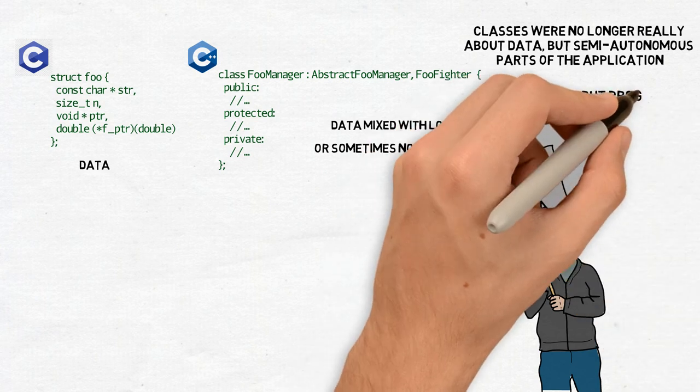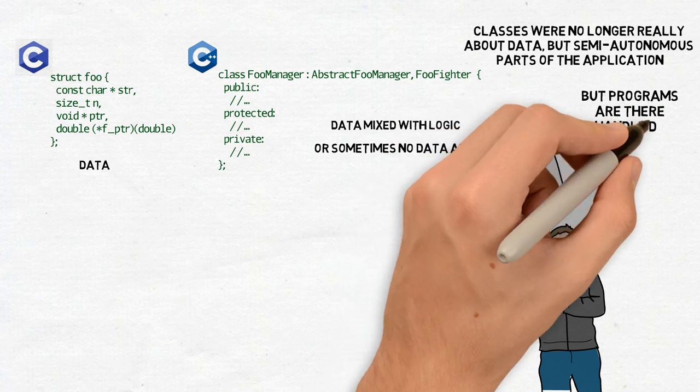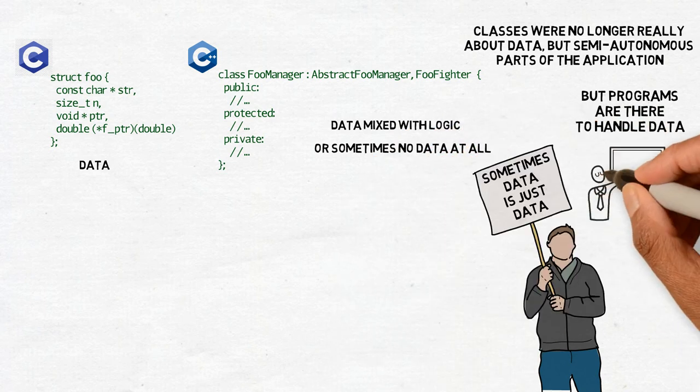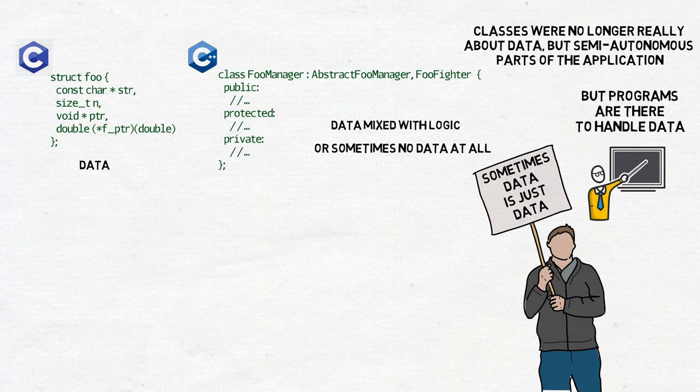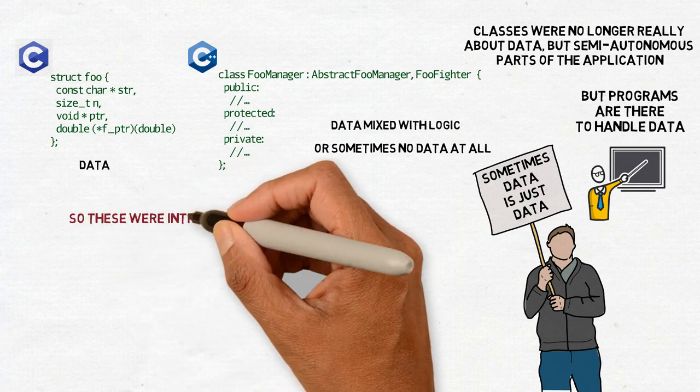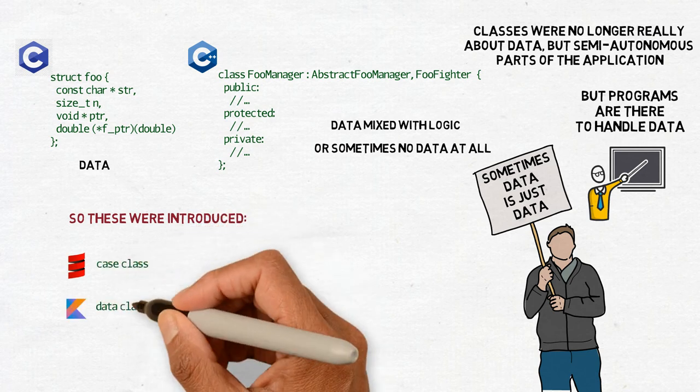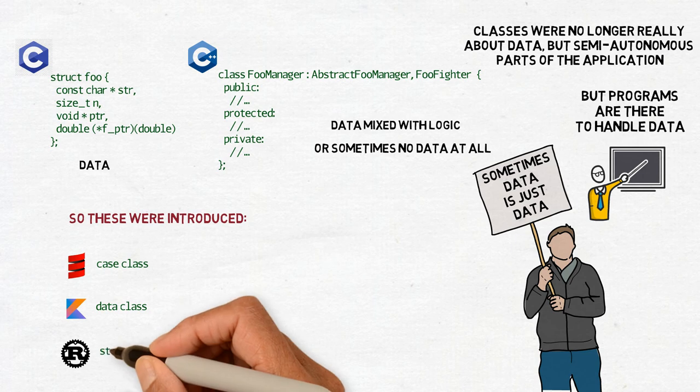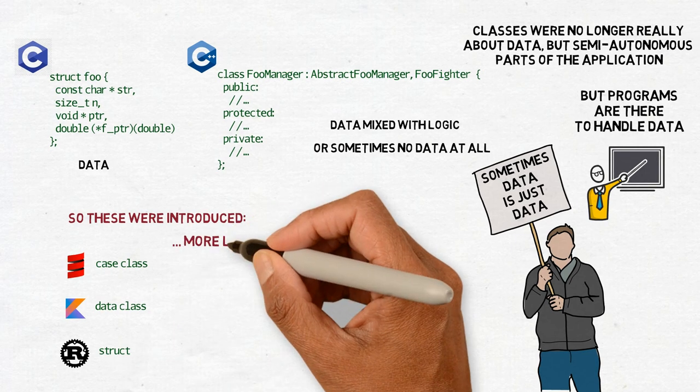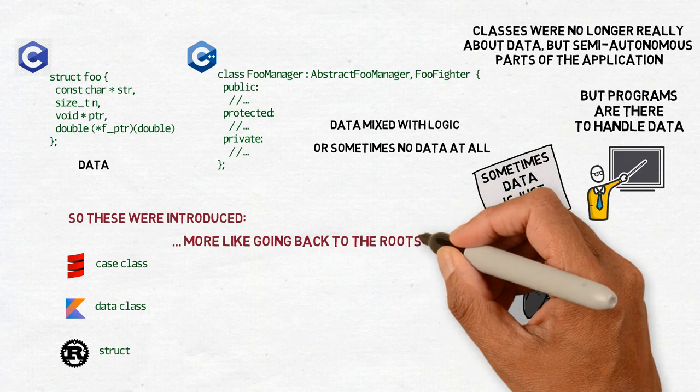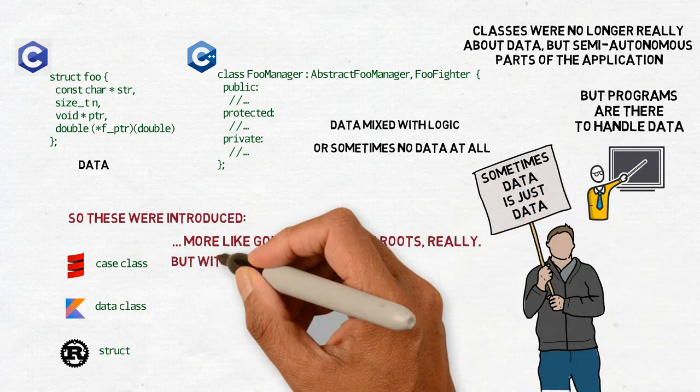But programs are there to handle data. Without it, all those fancy managers and workers, factories and facades, they have no reason to be. By marking a class as a case class in Scala, we state that it is designed to be a data structure. The Scala compiler will put some limitations on it but it will also automatically enrich it with features that otherwise we would have to code ourselves.